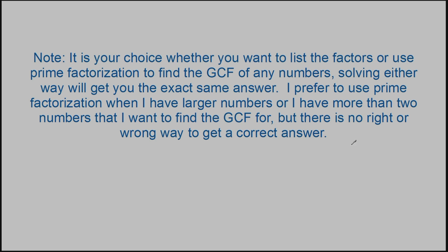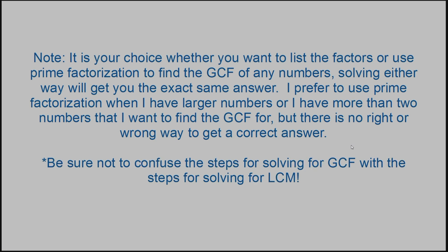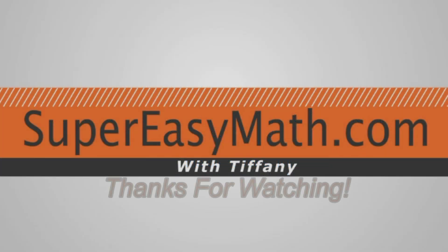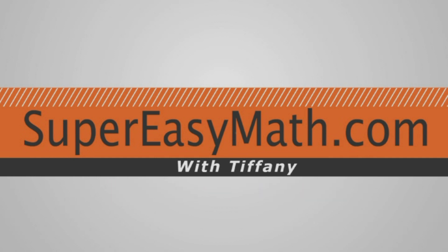Just a note: it's your choice whether you want to list the factors or use prime factorization to find the greatest common factor. Solving either way will get you the exact same answer. I prefer to use prime factorization when I have larger numbers or more than two numbers to consider, but there is no right or wrong way to get a correct answer. Be sure not to confuse the steps for solving for greatest common factor with the steps for solving for least common multiple — they look very similar but have minor differences. Check out the least common multiple video if you get confused. Thanks for watching! Don't forget to click like and head over to supereasymath.com for more math tutorials, printable video notes, worksheets, and more!